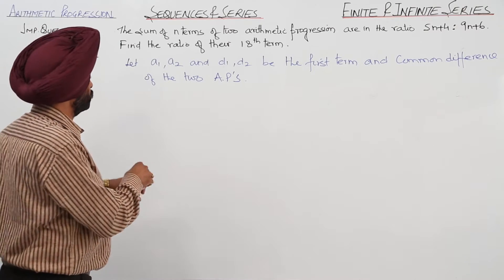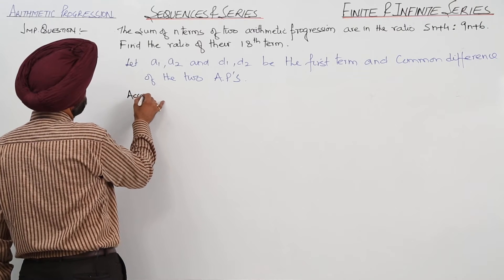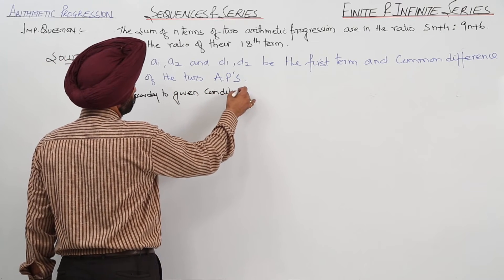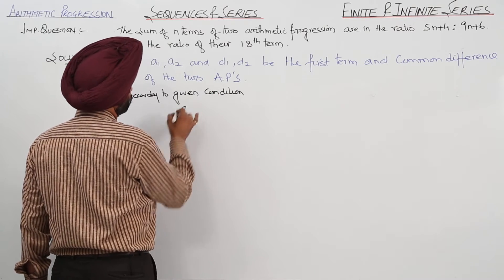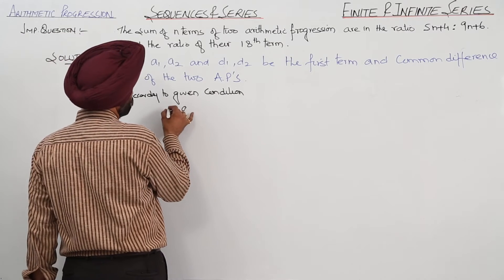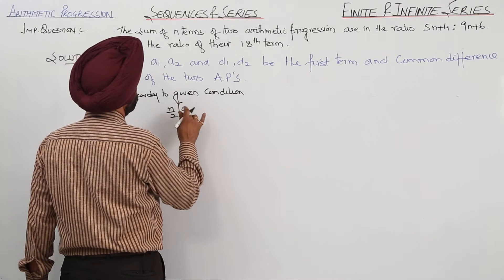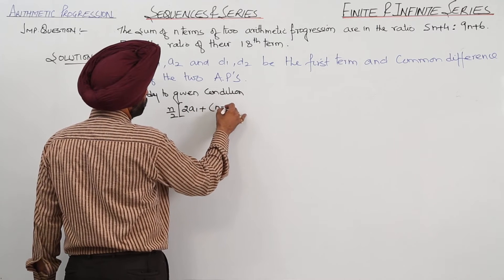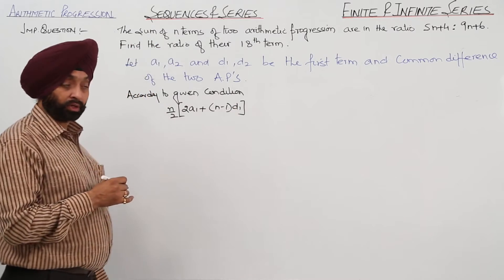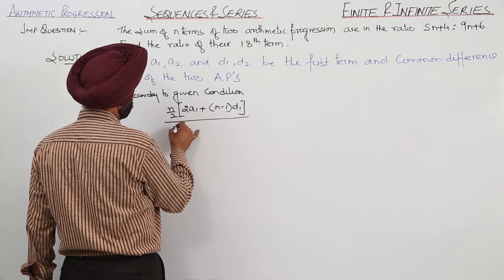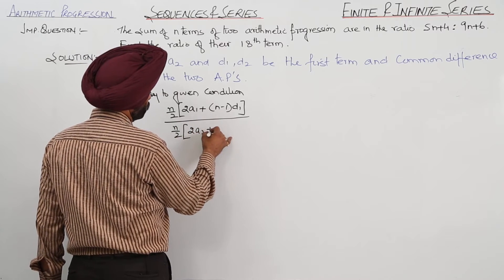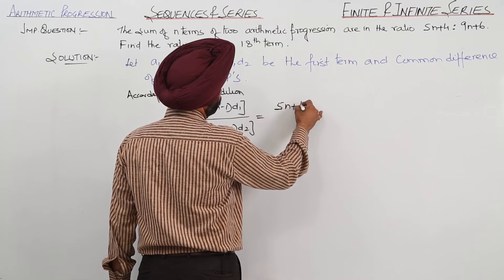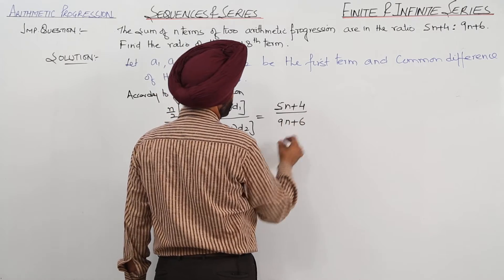It is given the sum of n terms. So according to the given condition, we are applying the formula for Sn: n upon 2 times (2a1 plus n minus 1 times d1) divided by n upon 2 times (2a2 plus n minus 1 times d2) is equal to the given ratio, which is 5n plus 4 upon 9n plus 6.